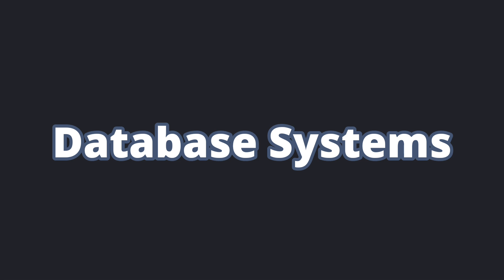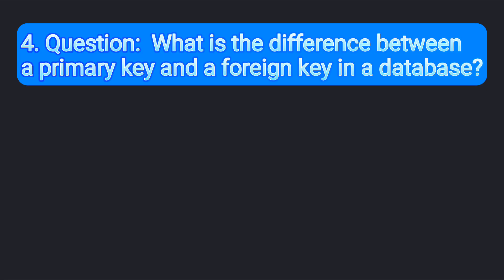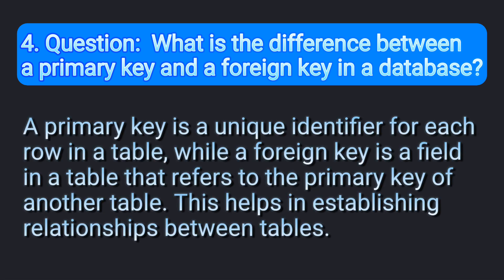The second topic is Database Systems. Question number 4: What is the difference between a primary key and a foreign key in a database? A primary key is a unique identifier for each row in a table, while a foreign key is a field in a table that refers to the primary key of another table. This helps in establishing relationships between tables.